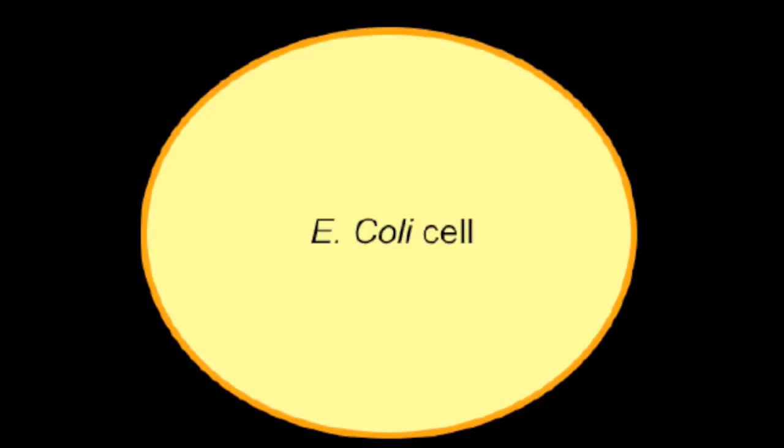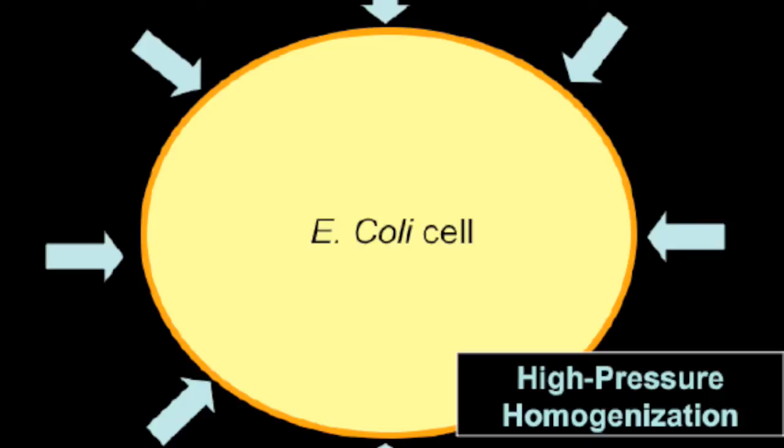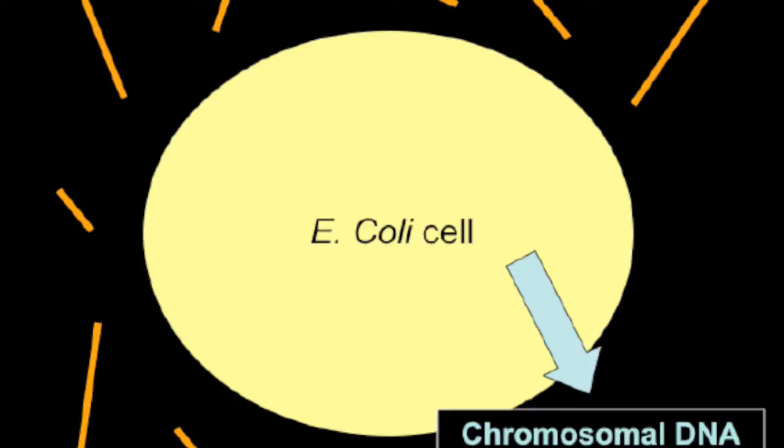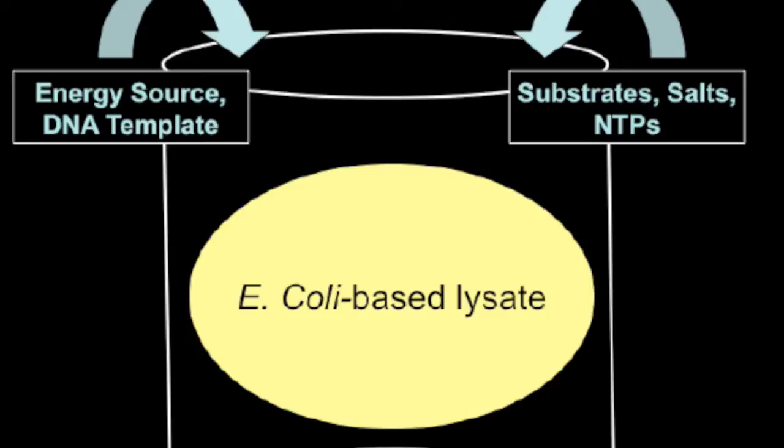Dr. Schwartz's lab prepares a cell extract for protein synthesis by first growing E. coli cells and washing away the spent growth medium. They then use high-pressure homogenization to break the cells apart. They centrifuge the mixture to remove the cell wall and much of the chromosomal DNA. And finally, they add a DNA template, nucleotide triphosphates, an energy source like phosphoenolpyruvate or glucose, and other factors that make protein production possible without intact cells.